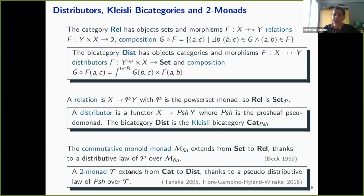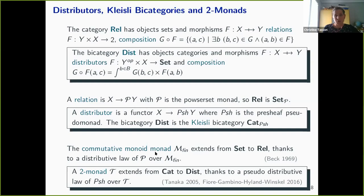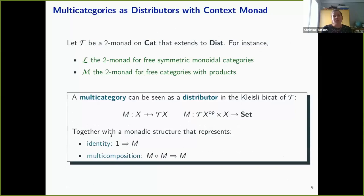We are interested in looking at the bi-category of distributors as the classifying bi-category of CAT over the pre-sheaf pseudomonad, just as we can look at the relation category as the classifying category of SET over the powerset monad. The reason we want to do that is because we can then use a distributive law — or more precisely a pseudo-distributive law — between two monads representing the context and the pre-sheaf pseudomonad. We are interested in two context monads: L, which stands for the free strict symmetric monoidal categories, and M, which stands for the two-monad for free categories with products.